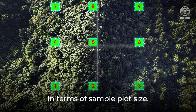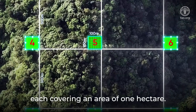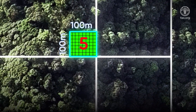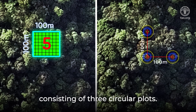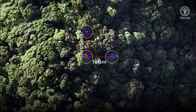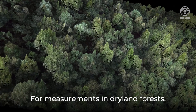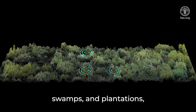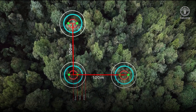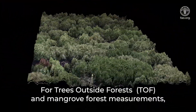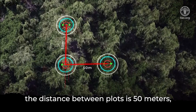In terms of sample plot size, the previous method consisted of nine plots, each covering an area of one hectare. However, the new NFI method uses an L-shaped cluster plot design consisting of three circular plots. For measurements in dryland forests, swamps, and plantations, the distance between plots is 100 meters each. For trees outside forests and mangrove forest measurements, the distance between plots is 50 meters.